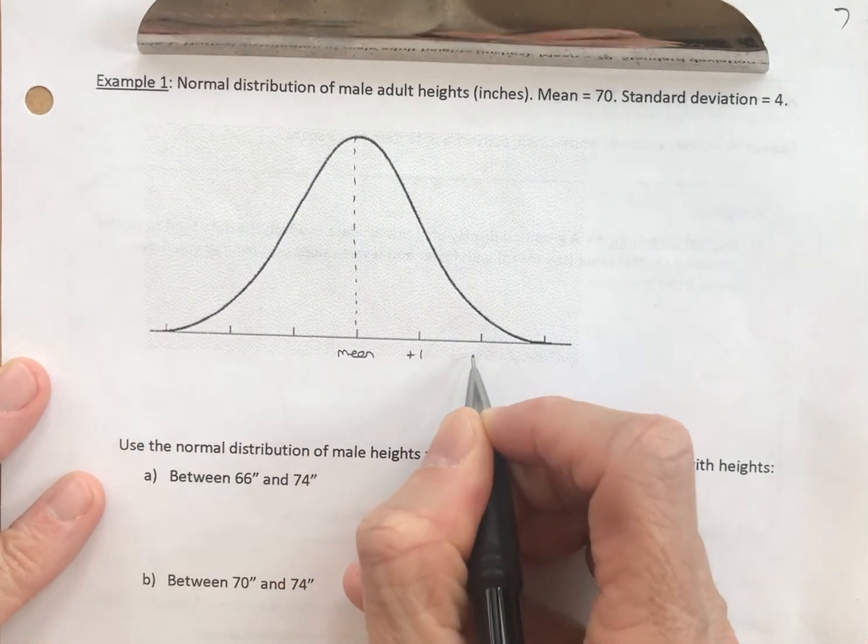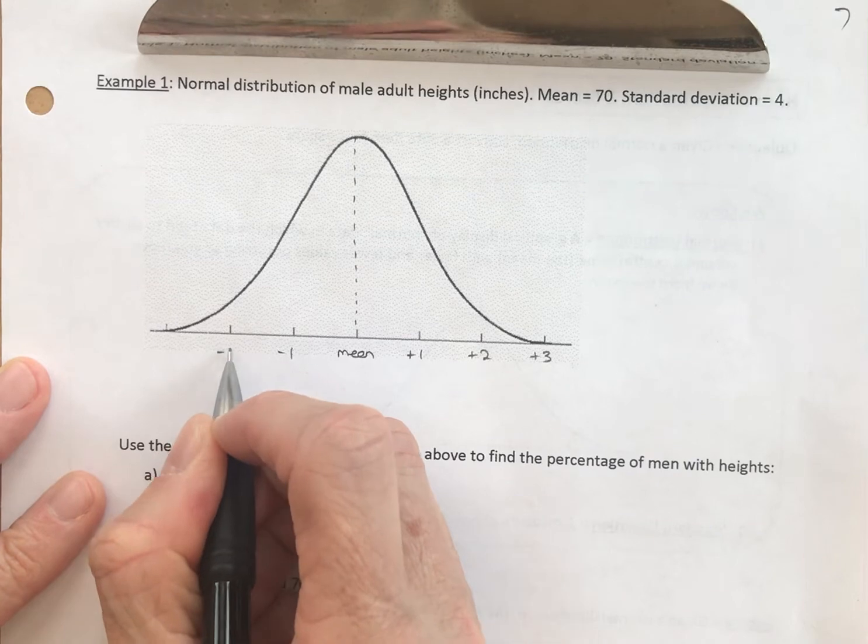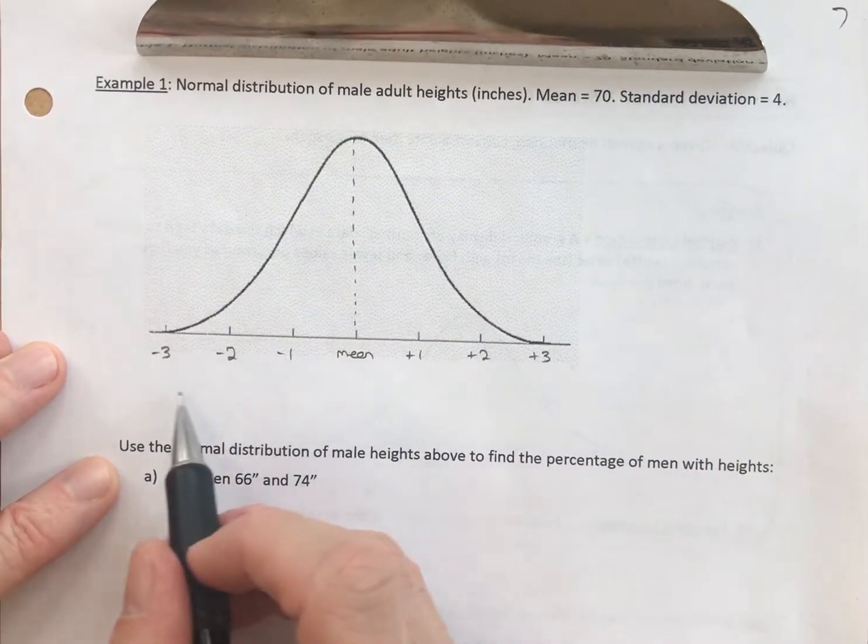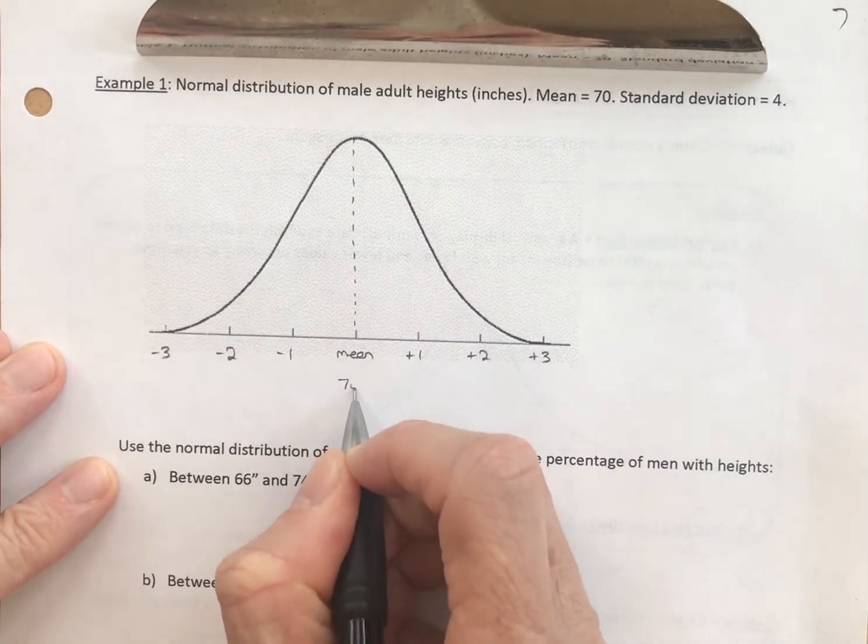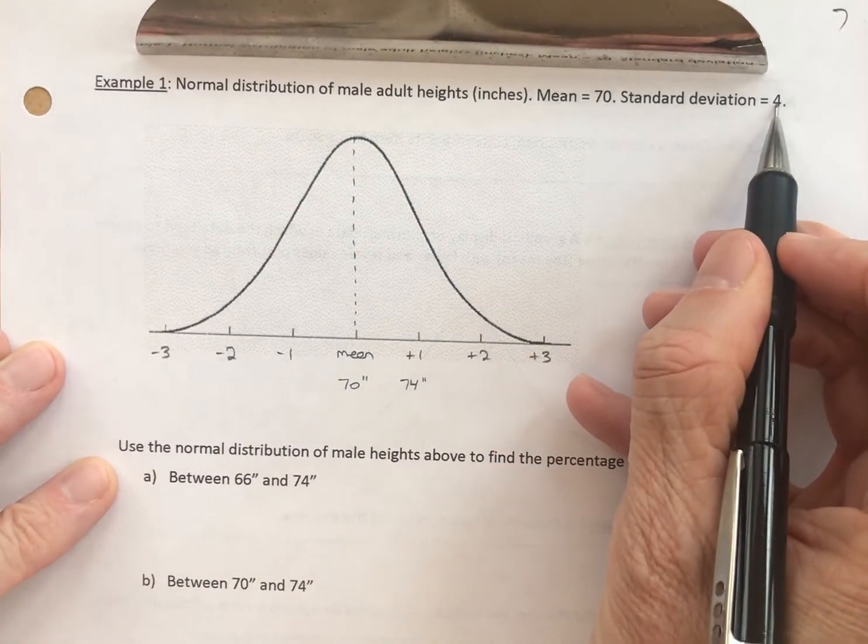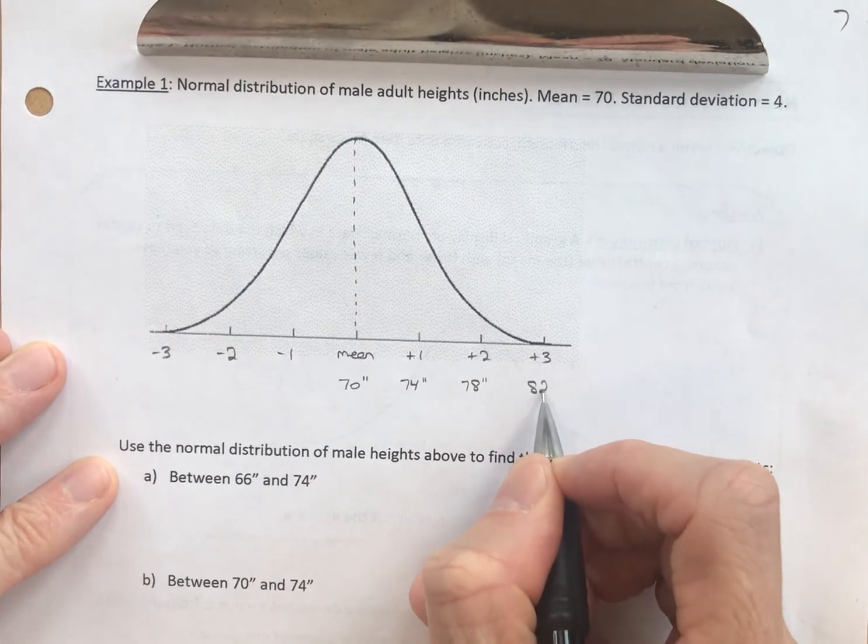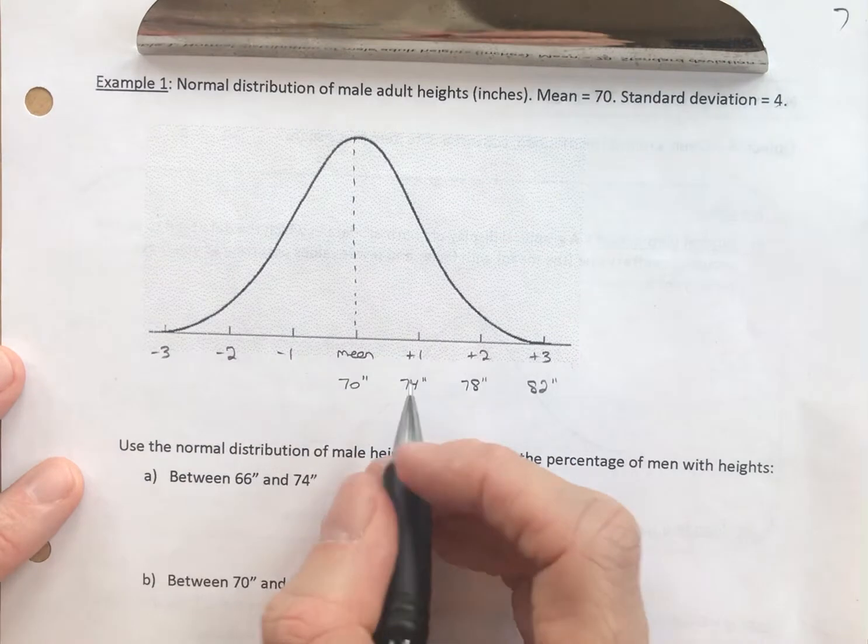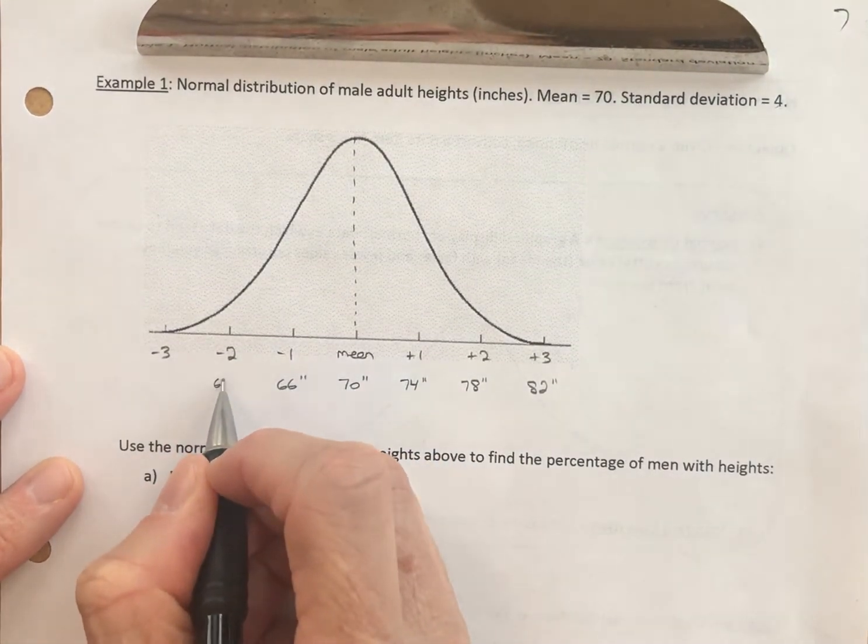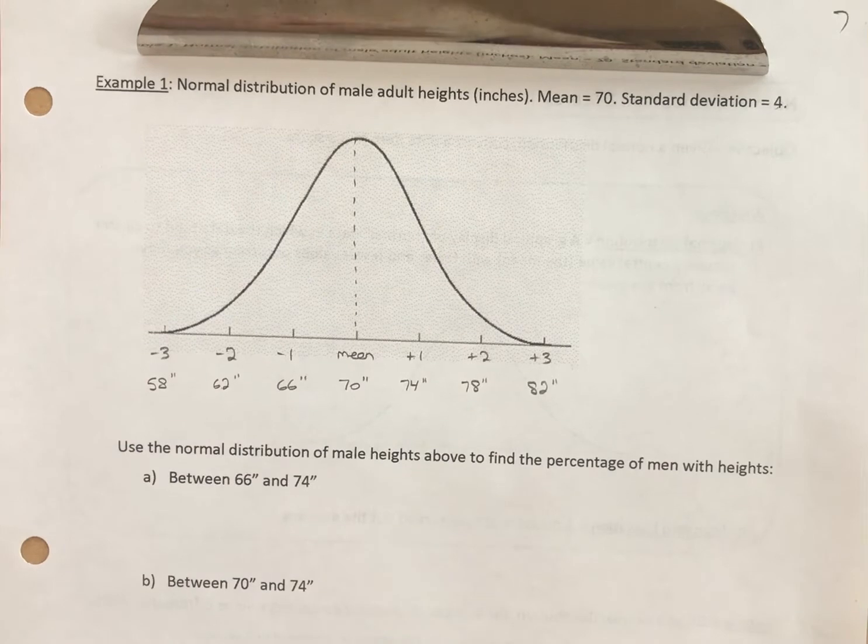This is the mean. This is one standard deviation above, 2 above, 3 above, and it goes on to infinity. This is one standard deviation below, 2 below, and 3 below, and it goes on to negative infinity. Let's put in the numbers that apply to this situation. Our mean for adult men is 70 inches. One standard deviation above the mean is 74 inches - add 4. Add 4 again for two standard deviations above. Add 4 again for three standard deviations above. Now let's go below the mean - subtract 4, and we're at 66 inches, one standard deviation below. Subtract 4, and we're two standard deviations below at 62 inches. And subtract 4, and we're three standard deviations below at 58 inches.